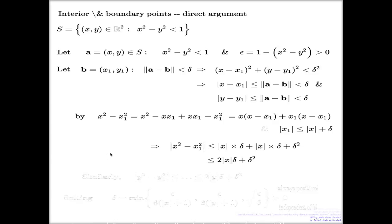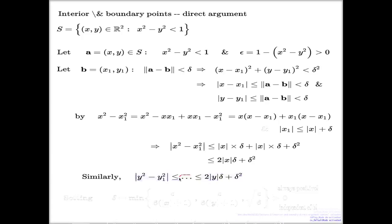All of the estimates given for the x component, I can do similar estimates for the y components. I'll hide the details with dots — the similar estimates for the y components look analogous, giving a bound involving |y|, delta, and delta².